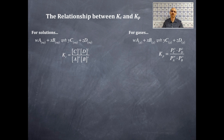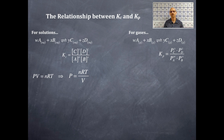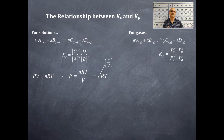Now we need a relationship between Kc and Kp. Starting from PV = NRT, the ideal gas law, we solve for pressure by dividing both sides by volume: P = NRT/V. We can modify this slightly — P = CRT — where C is the quotient of N and V, moles over liters, which is a concentration. That's why it's C for concentration. So the pressure of A equals the concentration of A in brackets times RT.